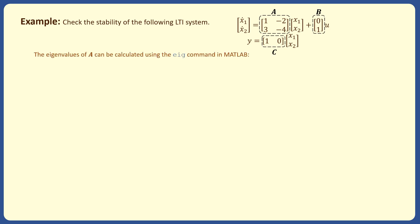The eigenvalues of A can be found using, for example, the eig command in MATLAB. If we type in these two lines in the MATLAB command window, then MATLAB will return the values of the eigenvalues of A, which are minus 1 and minus 2.